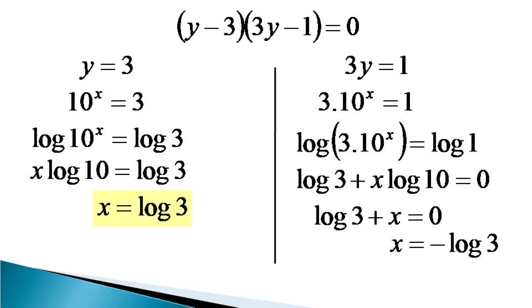So there are two solutions: x is equal to log 3 and x is equal to minus log 3. Both these solutions can be expressed in one line as x is equal to plus minus log 3. This is the solution to the given exponential equation by substitution. Thanks a lot for watching.